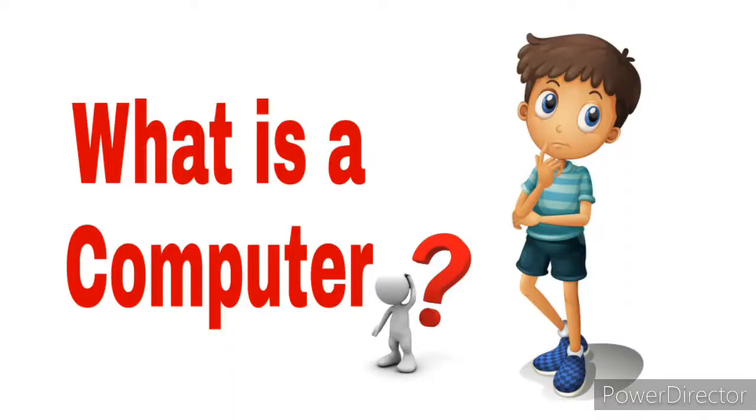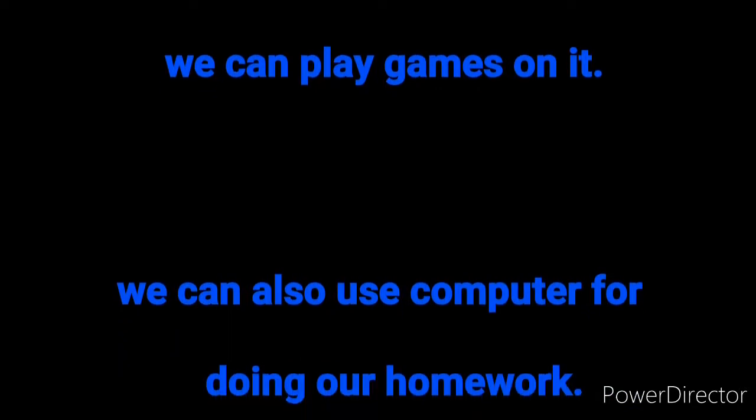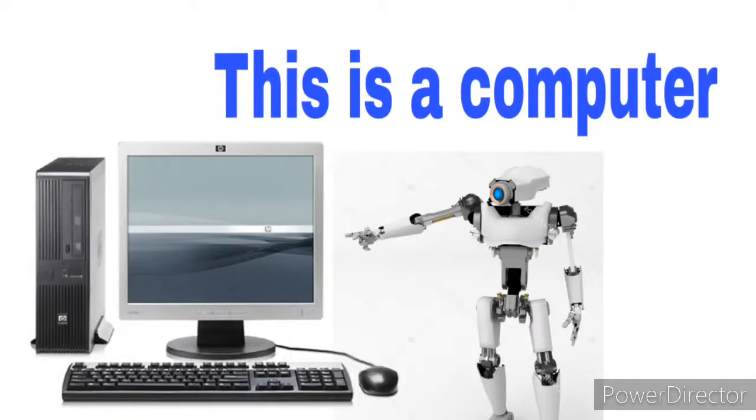But what is a computer? A computer is a man-made machine. It works on electricity. It helps us to perform tasks very fast. We can draw and color pictures in a computer. We can play games on it. We can also use a computer for doing our homework. Hey friends, this is a computer.